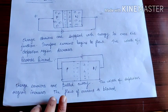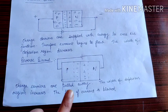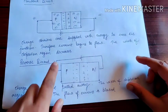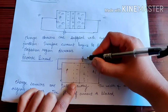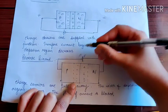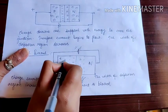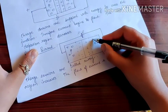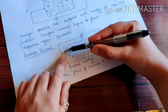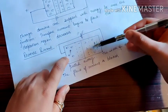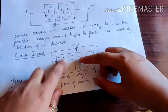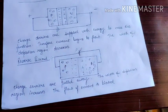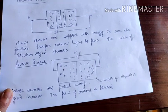In reverse biasing, we connect P to the negative terminal and N to the positive terminal. In P-type, the majority charge carriers are holes, and in N-type they are electrons. The charge carriers are pulled away from the junction. The holes in P move further away and the electrons in N move further away. Therefore, the width of the depletion layer increases, the region devoid of charge carriers grows larger, and the flow of current is blocked. So the diode conducts only under forward biased conditions.